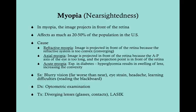LASIK - laser in situ keratomileusis - is becoming increasingly prevalent. It can't be done until the eye is done developing, usually around 18 to 21 years old. The procedure takes about five minutes; a laser burns away part of the lens to fix the convexity for myopia or concavity for hyperopia. LASIK is a permanent treatment and typically cures the myopia or hyperopia.